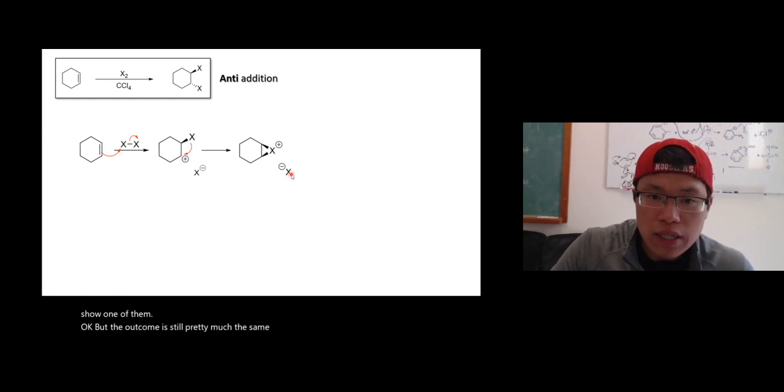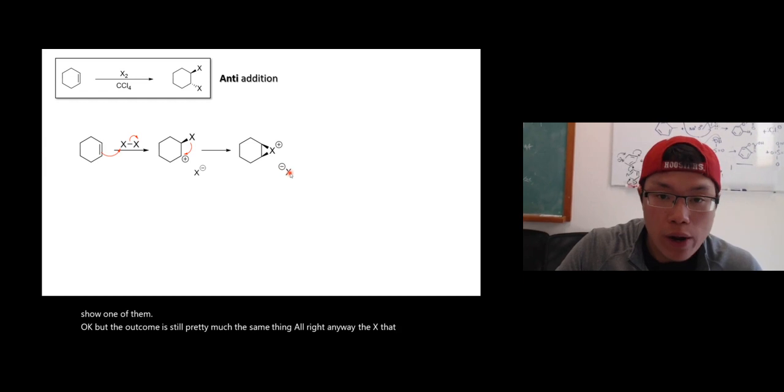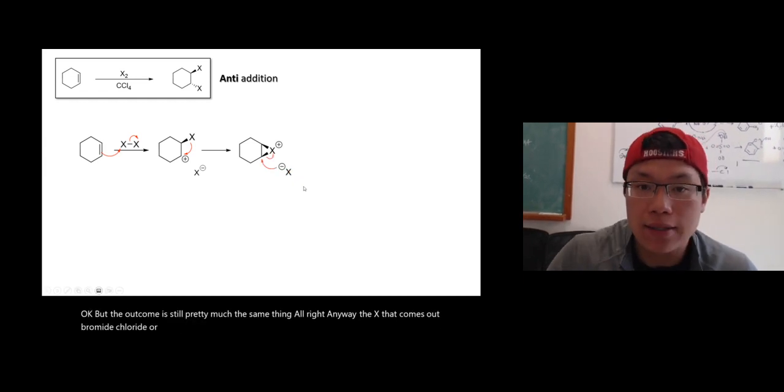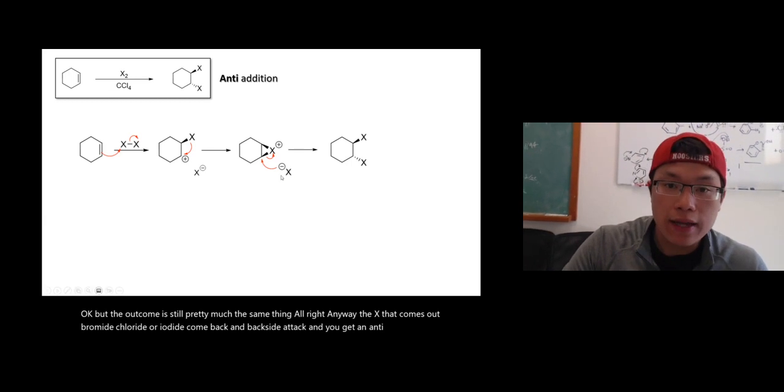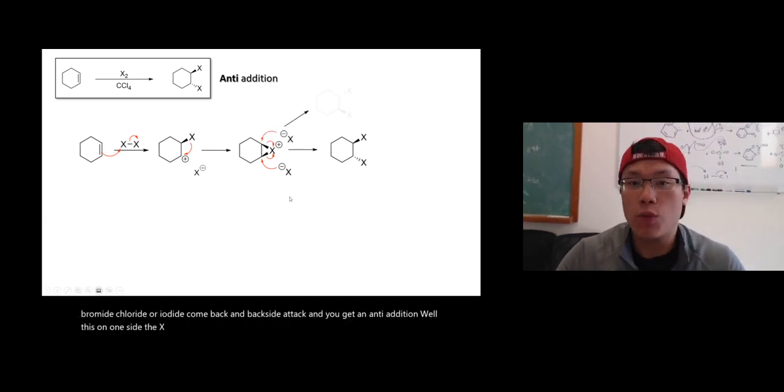Alright, anyway, the X that comes out, bromide, chloride, or iodide, come back and backside attack, and you get an anti-addition. Well, this on one side, the X also can do the other side, and you get the other one.